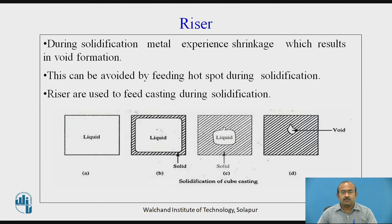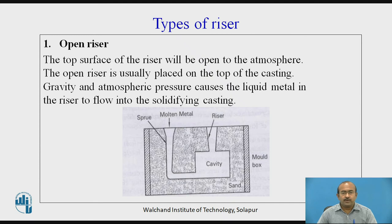During solidification, metal experiences shrinkage which results in void formation. This can be avoided by feeding hotspots during solidification. Risers are used to feed the casting during solidification. Regarding types of risers — open riser: the top surface of the riser is open to the atmosphere and is usually placed on top of the casting. Gravity and atmospheric pressure cause the liquid metal in the riser to flow into the solidifying casting.